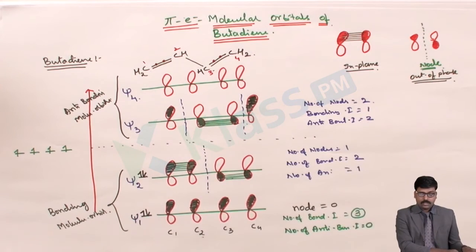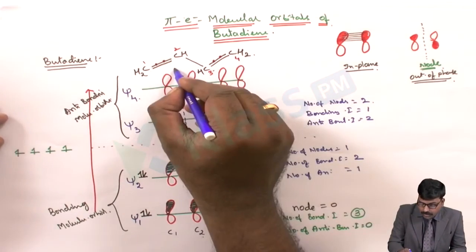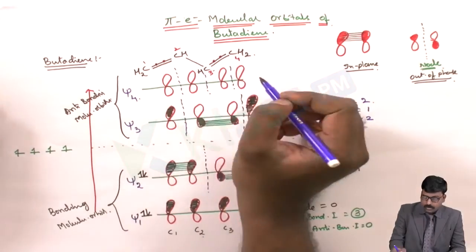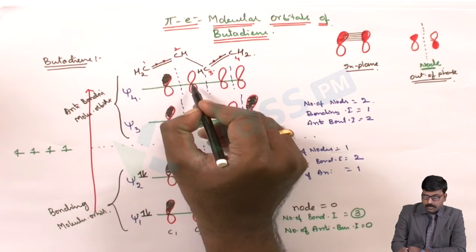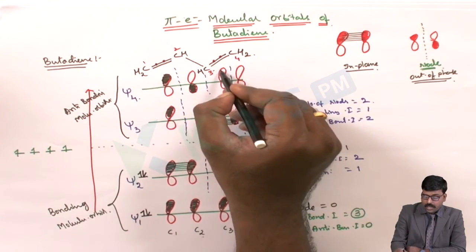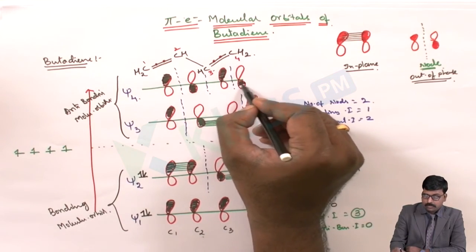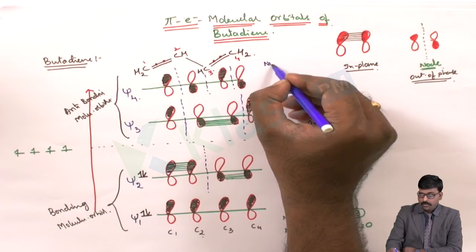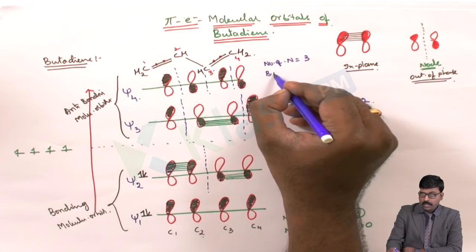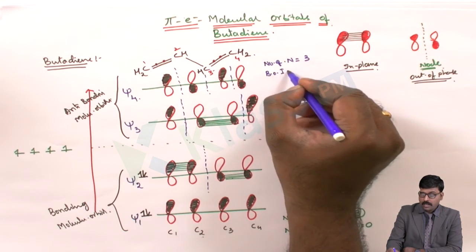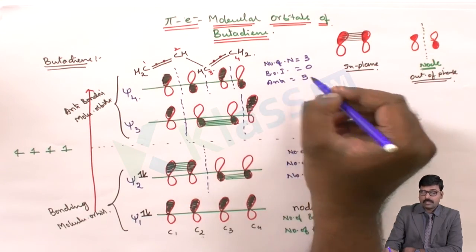For psi 4, the number of nodes is three. With three nodes, we plot the electron cloud in the opposite direction for each and every p orbital. So for psi 4: number of nodes = 3, bonding interactions = 0, anti-bonding interactions = 3.